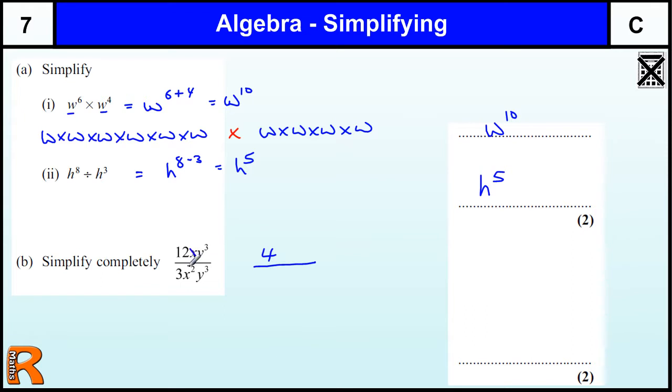This x cancels with one of those x's to just leave x on the bottom. And this y³ cancels with that y³, leaving 4/x. There's nothing else left.